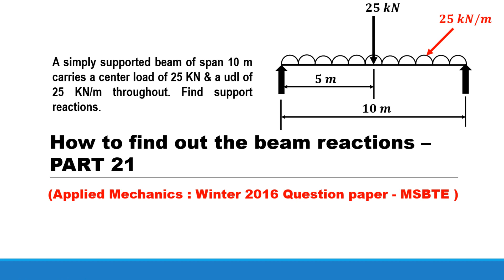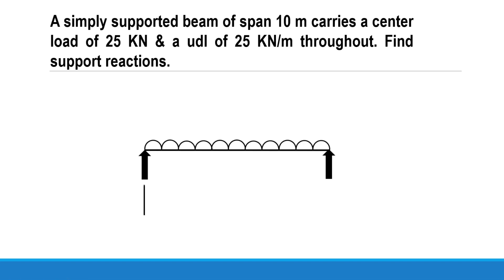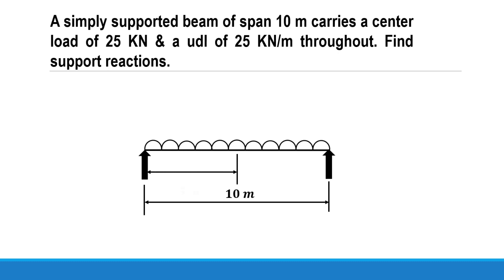In this video we will try to understand how to find out the beam reactions in case of a simply supported beam carrying uniformly distributed load throughout the span and a central point load. The problem statement is given here: a simply supported beam of span 10 meters carries a center load of 25 kilonewton and a uniformly distributed load of 25 kilonewton per meter throughout the span. Find the support reactions.